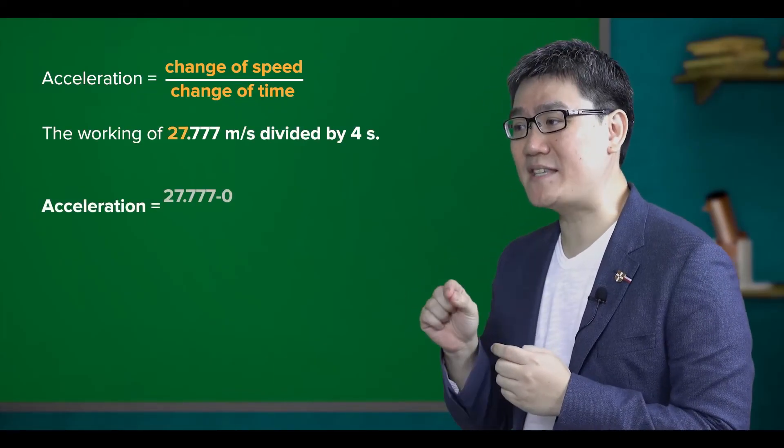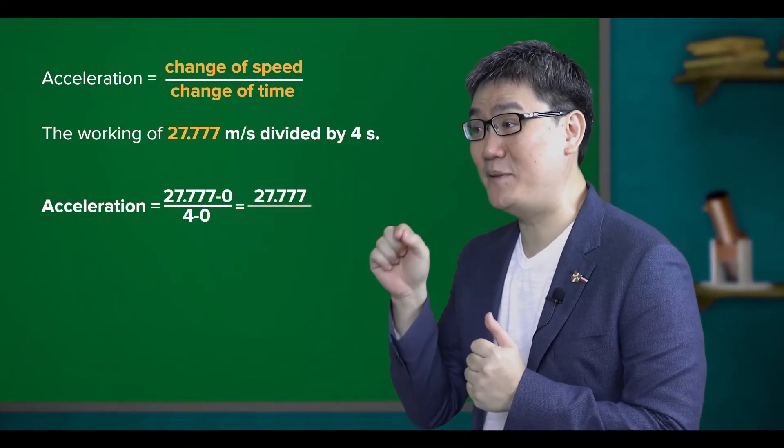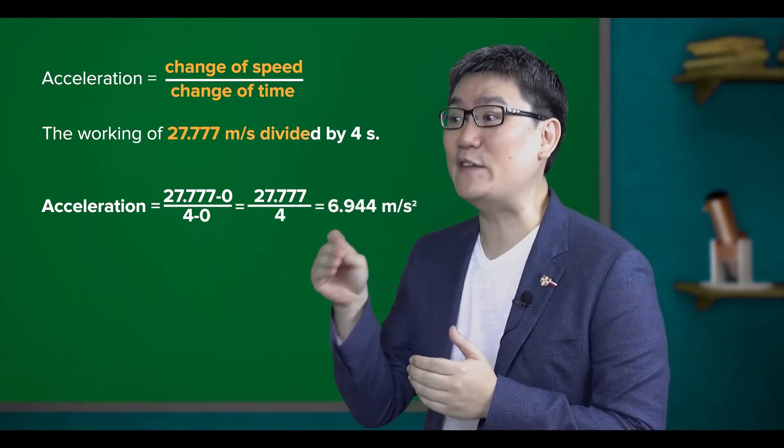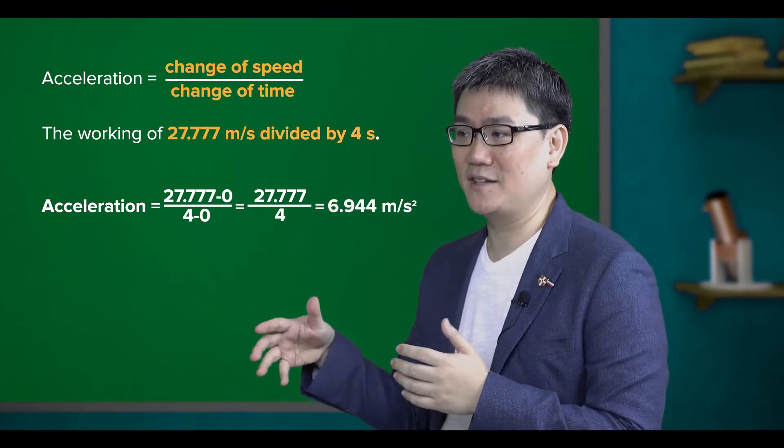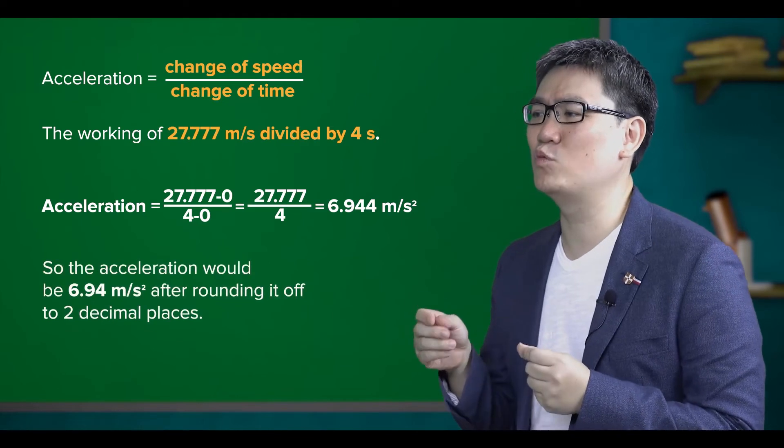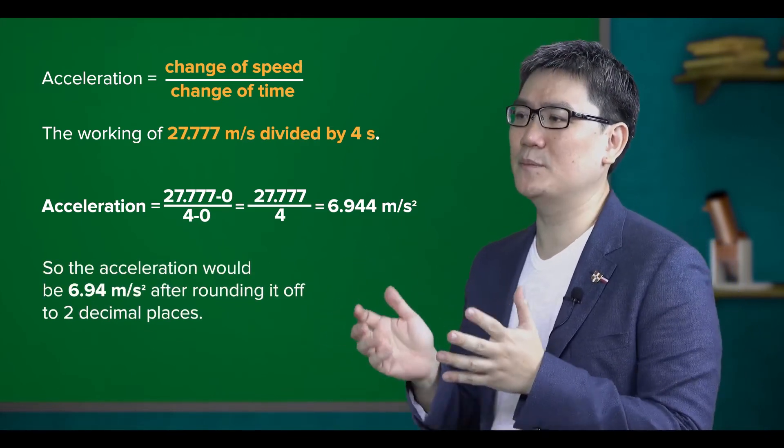This would give the working of 27.77 meters per second divided by 4 seconds. You will also need to round this off to 2 decimal places.